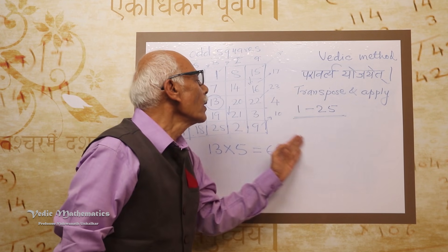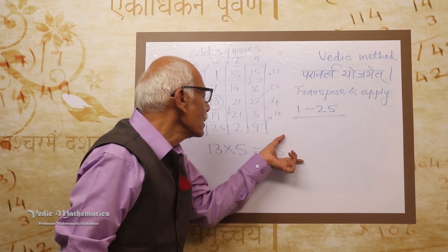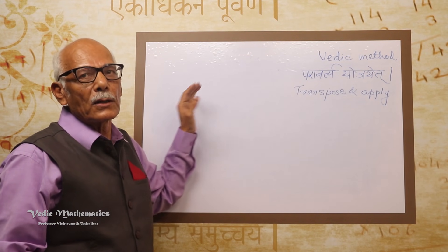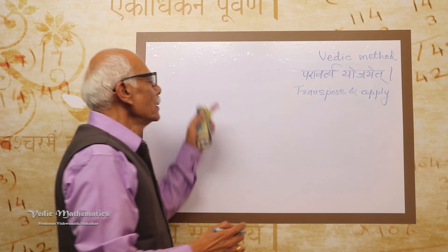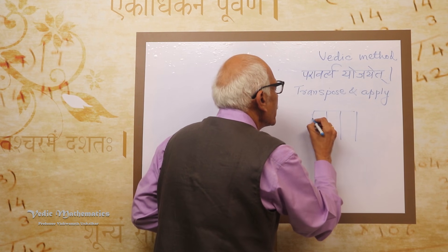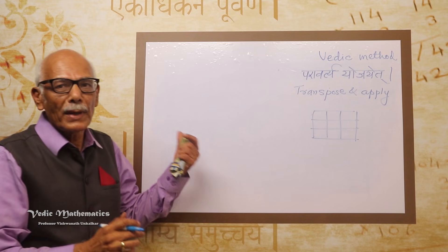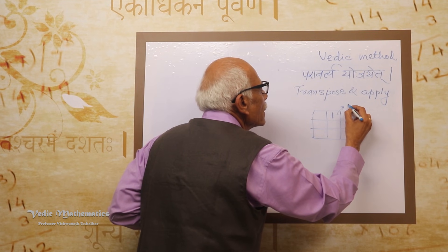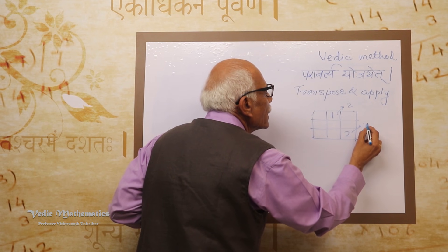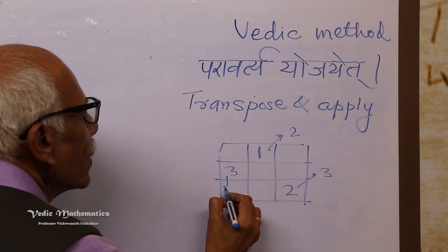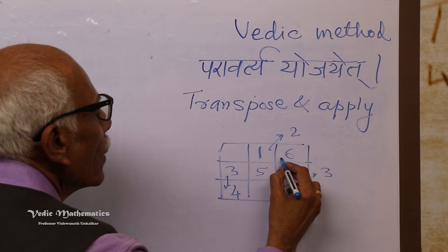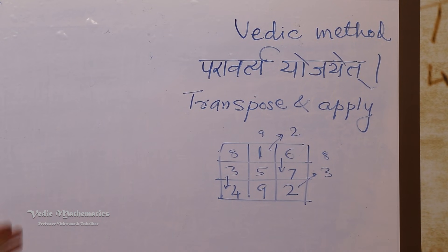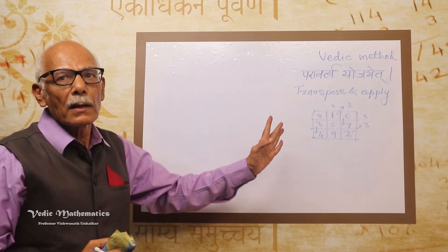Depending on what numbers you take, there will be different sums. In this way, we can fill any odd square — 3 by 3, 5 by 5, 7 by 7, 9 by 9. The 3 by 3 which we filled earlier with a different method can now use the same procedure: write 1 at the center of the top row, follow the north-east direction; 2 falls outside, bring it in; 3 falls outside, bring it in. When the next position is filled, go down. This directly gives the same magic square.